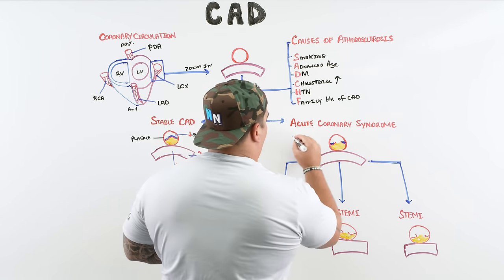After a patient develops NSTEMI or STEMI and infarcts tissue, several complications can arise. The first big complication is arrhythmias, which usually develop within the first 24 hours after an NSTEMI or STEMI — watch for these early in the course.